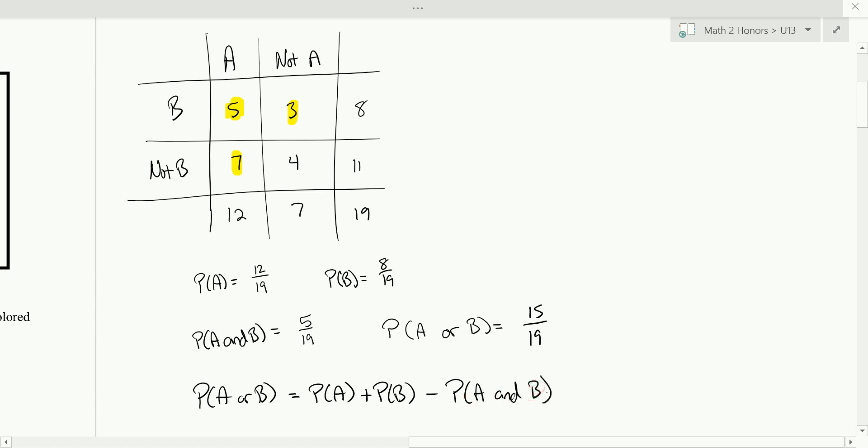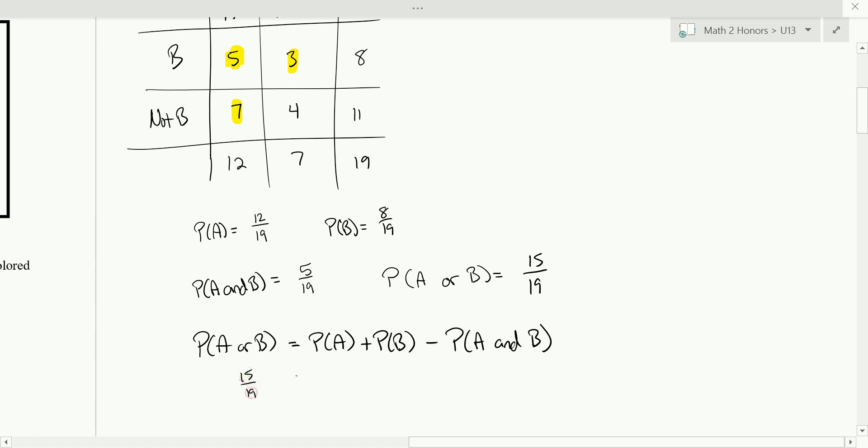And I want you to see why this is true. So we know the probability, in our case, if we put in our numbers, our probability of A or B is 15 out of 19. And that's saying that would be 12 out of 19 plus 8 out of 19 minus 5 out of 19. And do you see why we need that last part to subtract out? Because the 5 was included in both the 12 and the 8. And so we counted it twice. So we need to take it back out. Alright. And so this right here is the general formula, and it works really well. And it's a formula that we're going to want to know and commit to memory and we'll be using here and there.